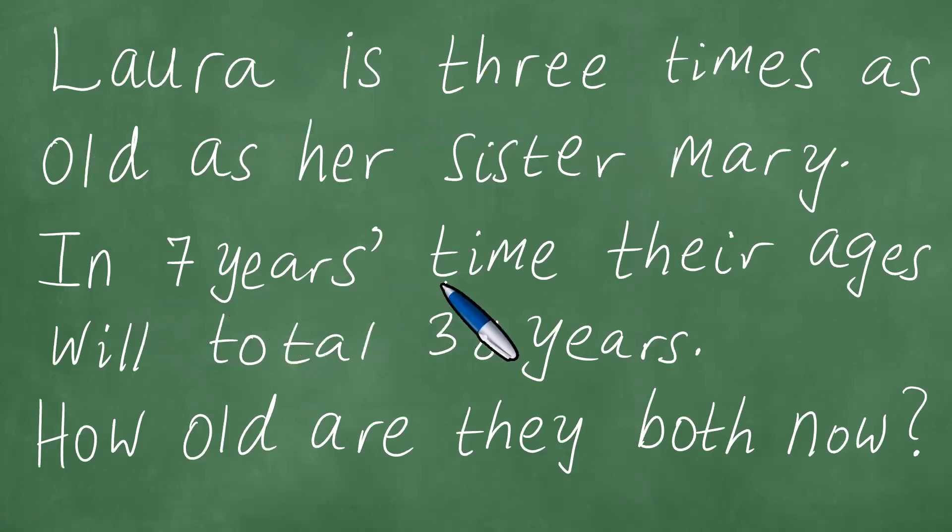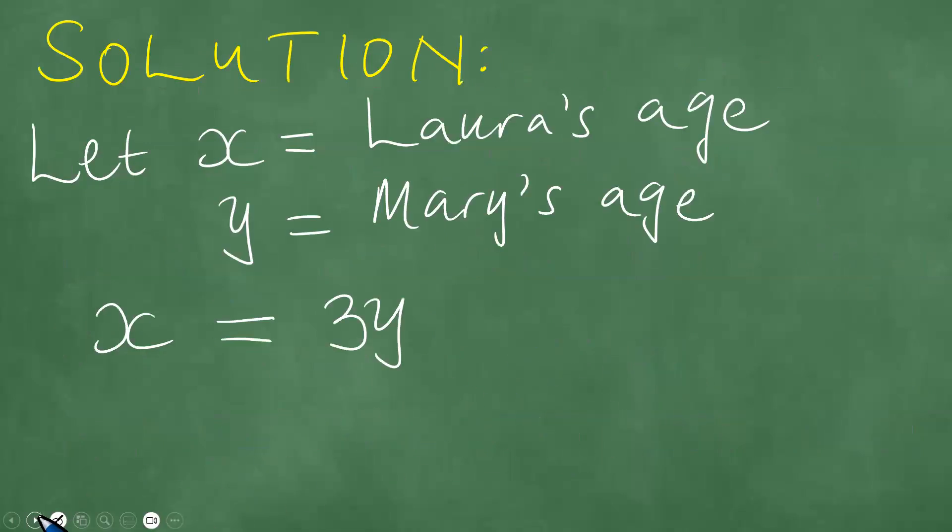In seven years' time, their ages will total 38 years. Right, so in seven years' time, meaning you have Laura's age in seven years' time, we add seven. And then Mary, also, we add seven. Right, Mary's age, we add seven.